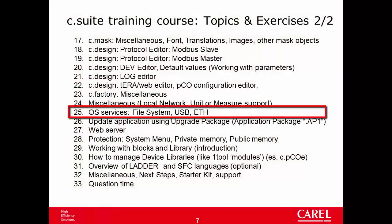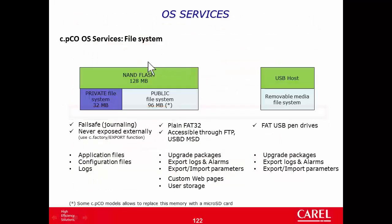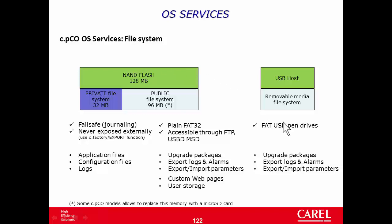Operating system services. We can start with the file system. A file system is used in the internal memory and in the pendrive connected to the USB port. The internal memory is 128 MB in both CPico and CPico Mini, and it is divided in two parts: a private memory of 32 MB and a public memory of about 90 MB.